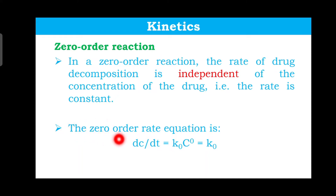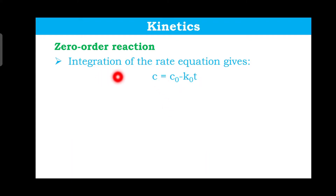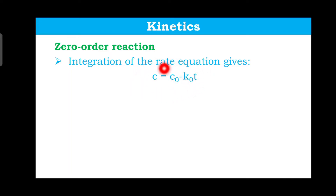The zero order rate equation comes from the general expression: dc/dt equals k times C to the power zero. Since n equals zero, anything raised to the power zero is one, so dc/dt equals k₀ — meaning the rate is a constant value. Integrating that gives us: C equals C₀ minus kt. This is the integrated form of the equation for a zero order reaction, and it is in the form of a straight line: y equals mx plus c.